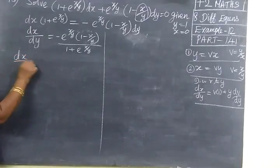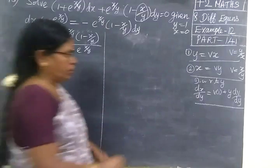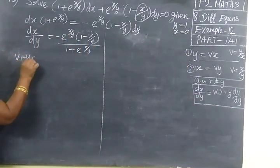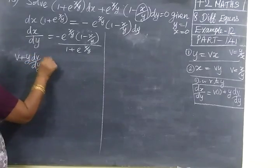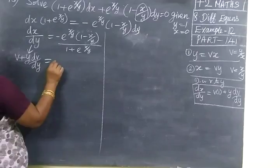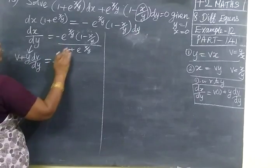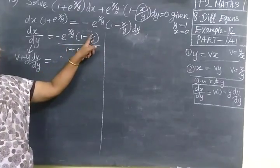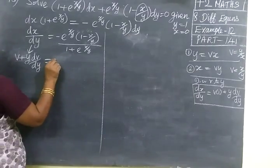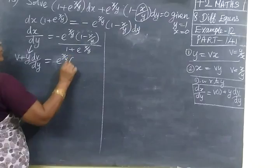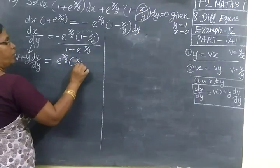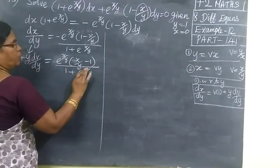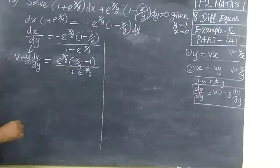For dx by dy you can substitute this value. So v plus y into dv by dy — substituting that value: e power x by y times (1 minus x by y) divided by (1 plus e power x by y). You can also remove the minus and write 1 minus x by y as x by y minus 1. So here you write it as e power x by y times (x by y minus 1) divided by (1 plus e power x by y).